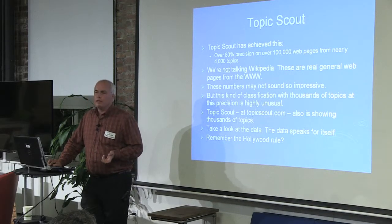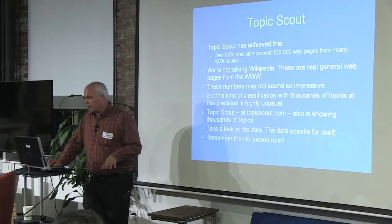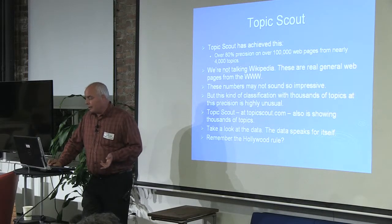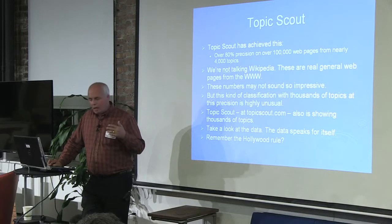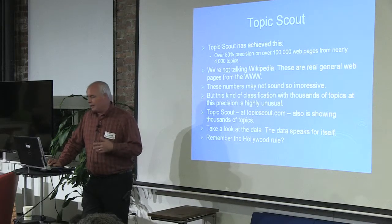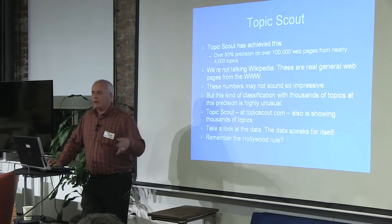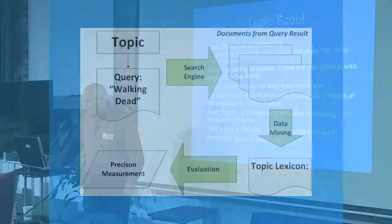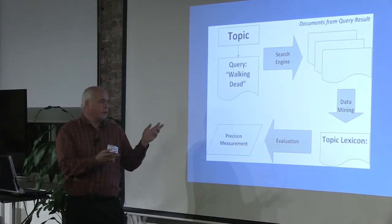TopicScout is showing thousands of topics, and if you look at the data you'll see lots of relevant items for many different topics, from health to shopping, computer science, and many other branches. It has one system of 10,000 topics. At a high level, every topic in the system is associated with one or more queries. If you have a topic for 'The Walking Dead,' you enter a query for it, it goes through a search engine, and gets back around 300 to 500 documents.